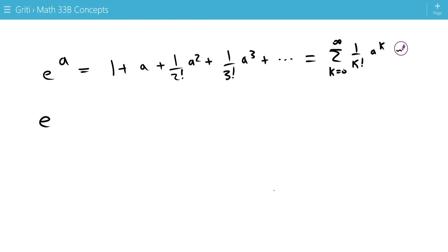Okay, for matrices, e to the a, where a is a matrix, equals the identity matrix, plus the matrix a, plus 1 over 2 factorial, times the matrix a squared, plus 1 over 3 factorial, times the matrix a cubed. So, this is a sum from k equals 0 to infinity, of 1 over k factorial, times a to the k power.